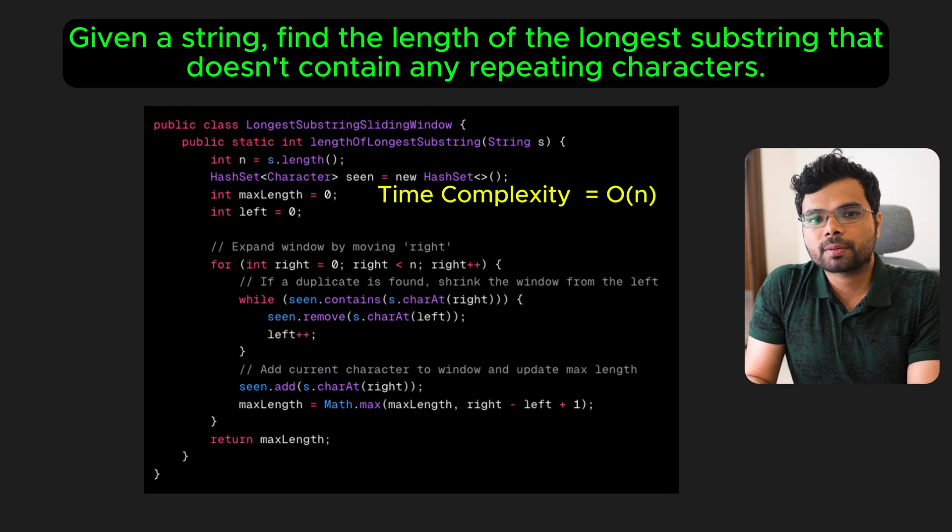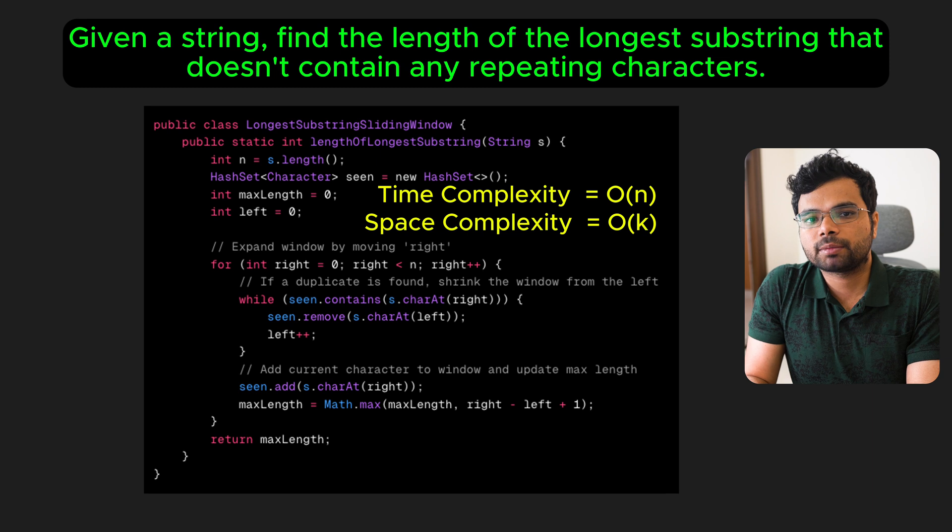The time complexity of this approach is order of n, since each character is processed at most twice, once when it's added to the window, and once when it's removed from the window. The space complexity is order of k, where k represents the size of the character set. In the worst case scenario, the hash set stores all the unique characters in the string.